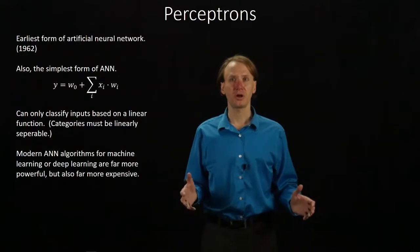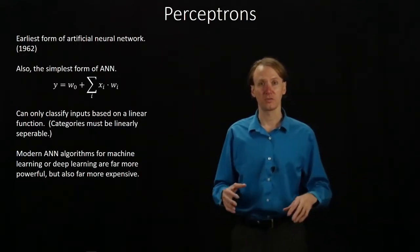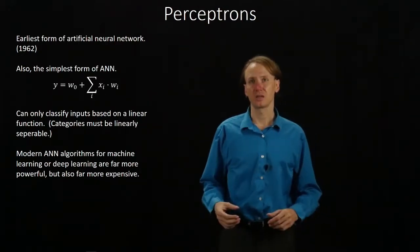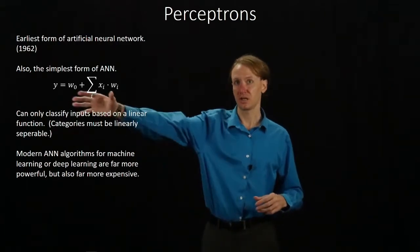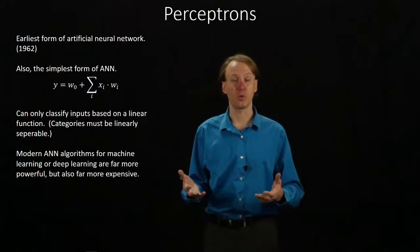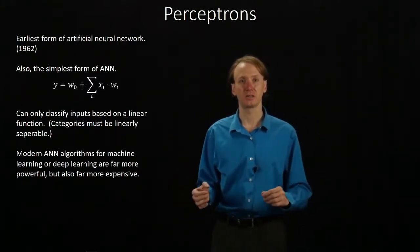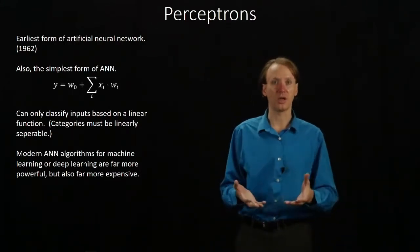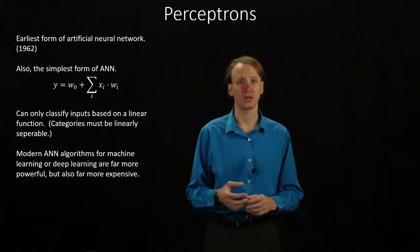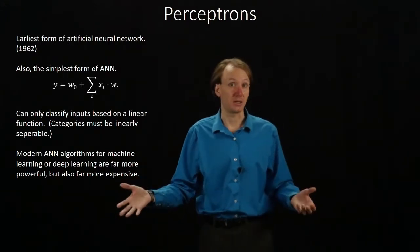So a perceptron is the earliest form of artificial neural network that we came up with. They were invented back in 1962. And they're really, really simple. It really just gives us this nice simple summation equation, which is pretty much just a weighted sum of all of the inputs that you get. Whatever your input x of i is, it's multiplied by the weight of that input. How important do we think that piece of data is for telling us about our result? Add all of those up, and it gives us an answer.